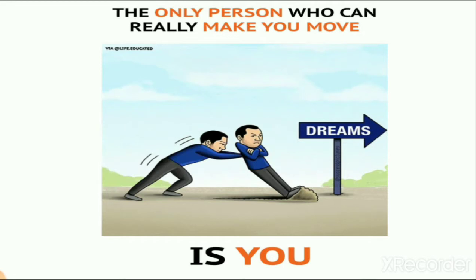Let's start today's lecture with one beautiful picture. You can see on your screen a picture of one person pushing another person, and both persons look the same. The meaning of this picture is that the only person who can really make you move is you. The arrow shows your dream — if you want to fulfill your dream and achieve your goal in life, you need to push yourself.